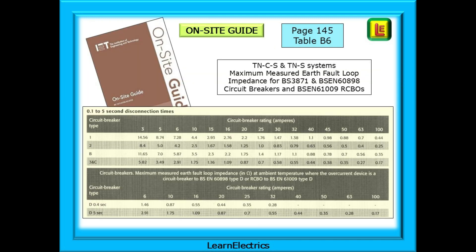If you have the On-Site Guide or OSG, you'll find Table B6 on page 145. Again, this contains data for TNCS and TNS systems and gives the maximum measured earth fault loop impedance for BS3871 and BSEN60898 circuit breakers and BSEN61009 RCBOs for different types.